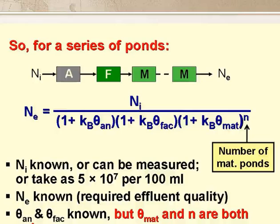For a series of ponds, remembering that the effluent of one pond is the influent to the next, we can derive the equation for NE shown on the slide. This says that NE — the number of E. coli per 100 ml of the final effluent — equals NI, the number per 100 ml of the raw wastewater, divided by a term for the anaerobic pond, one for the facultative pond, and one for the maturation ponds raised to the power N, where N is the number of maturation ponds.